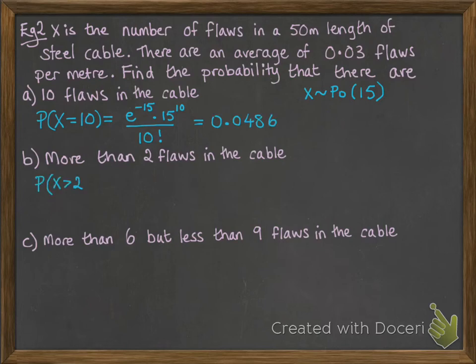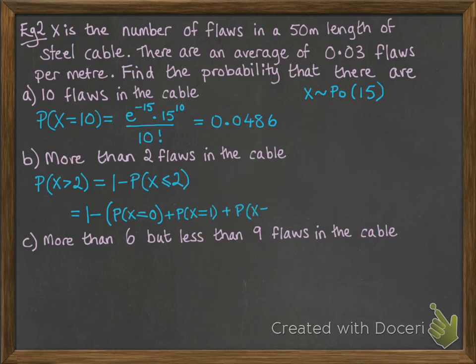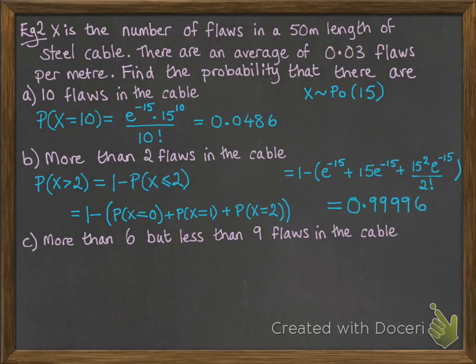If there were more than 2 flaws in the cable, that's 1 minus the probability that x is less than or equal to 2. Remember we did those sorts of things with binomial distribution. So then the probability that it's less than or equal to 2 is the probability that it's equal to 0 or 1 or 2. So we work each of those out and add them up. And get our final answer. Now notice I haven't rounded that one to three significant figures because that would round to 1 and that's not going to be enough detail for the question. So you need to be sensible about your answers if you get something like that.